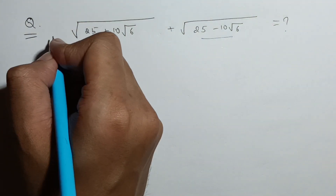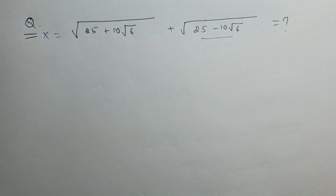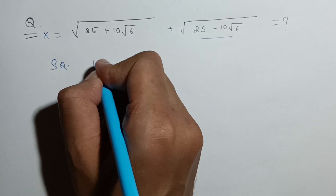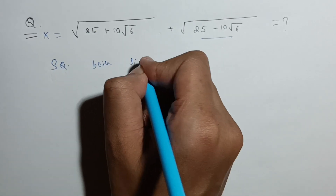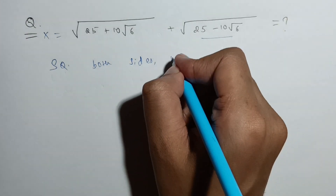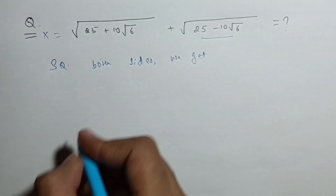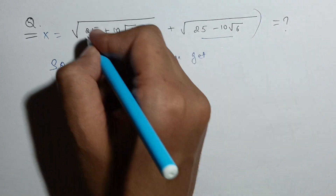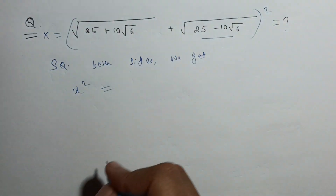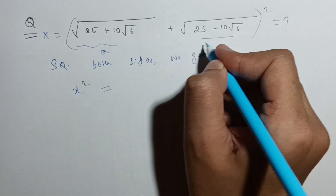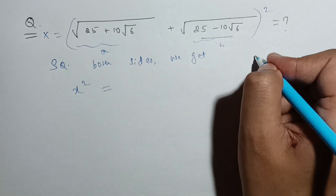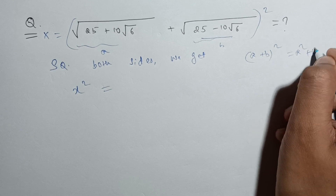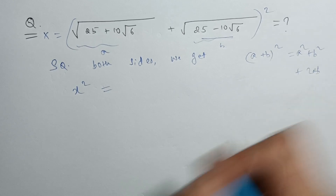Let's say this whole expression is x. If we square both sides, we get x² equal to the square of the whole right side. We can use the formula (a + b)² — let's say the first term is a and the second is b — so (a + b)² equals a² plus b² plus 2ab.